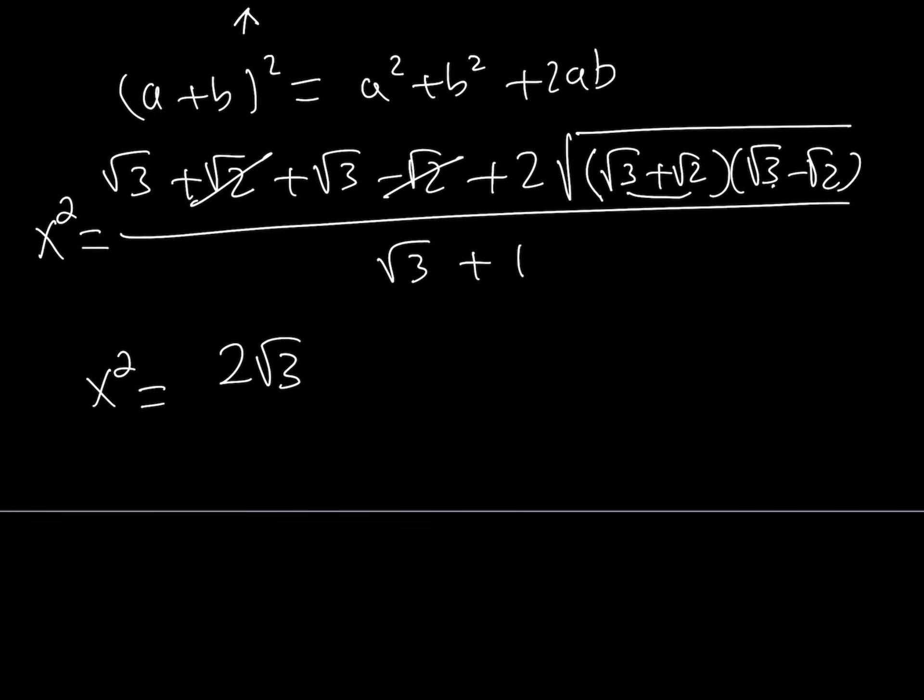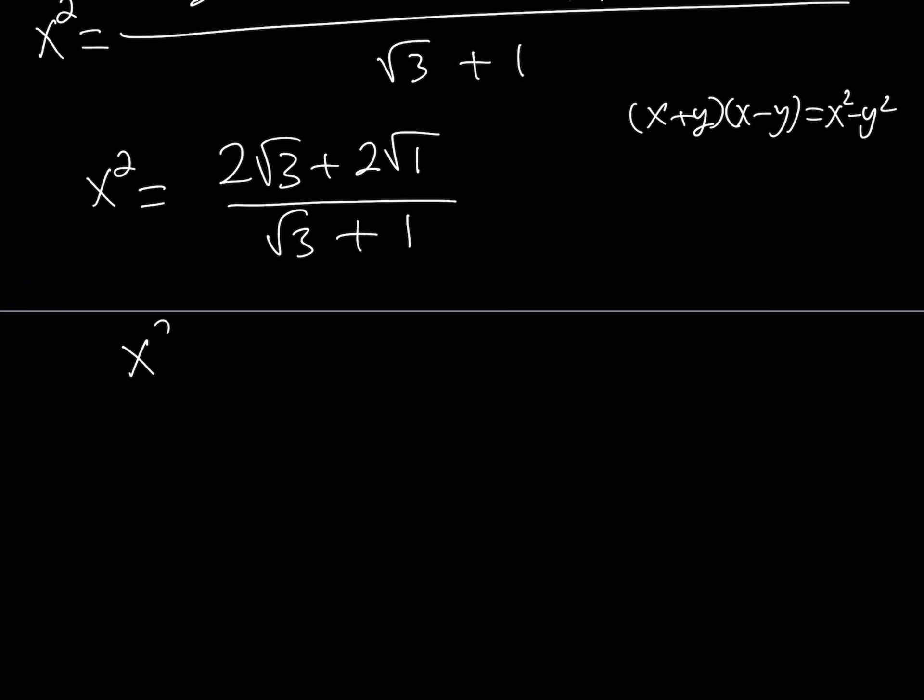We have root 3 plus root 2 and root 3 minus root 2. Those expressions are conjugates. And when you multiply two conjugates from difference of two squares, if you multiply x plus y by x minus y, you get x squared minus y squared. Therefore, the expression inside the radical should give you 3 minus 2, which is 1. So I can write it as the square root of 1, and then divide it by that. This simplifies, because 2 times the square root of 1 is just 2. So I can write x squared as 2 root 3 plus 2 divided by root 3 plus 1.